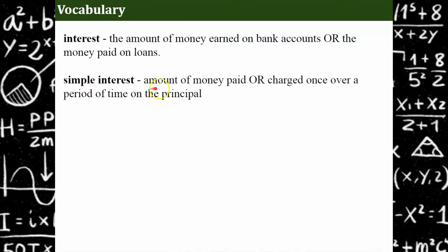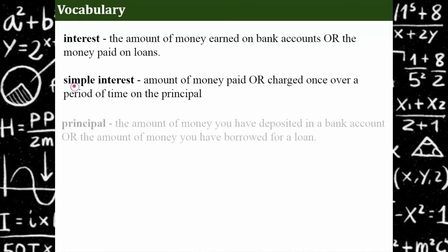Simple interest is the amount of money paid or charged once over a period of time on principle. Simple interest isn't the most common type of interest. Compound interest is, but you won't learn that until algebra one. So we're going to talk about simple interest today. And that is interest being given to you one time over a period of time.